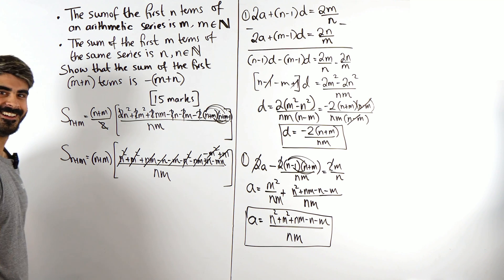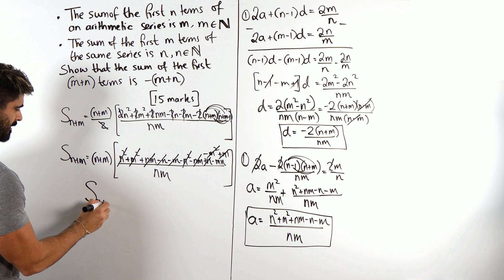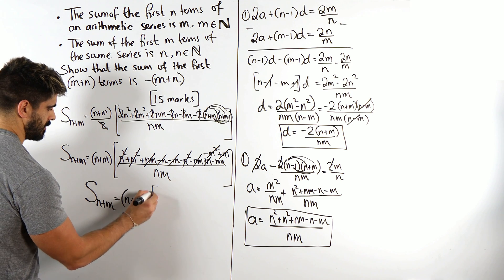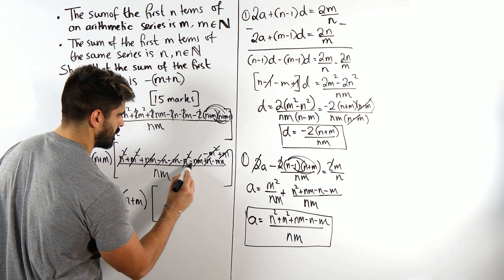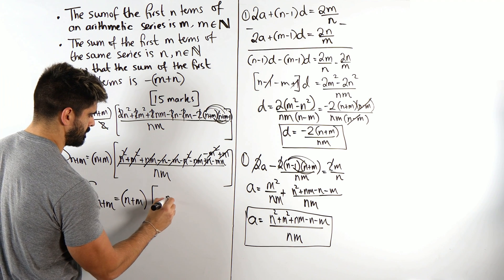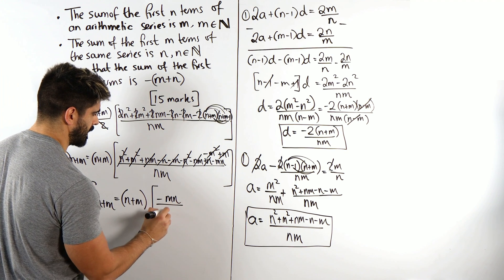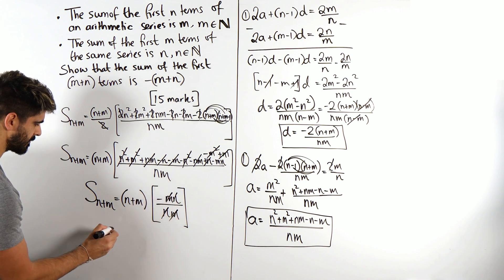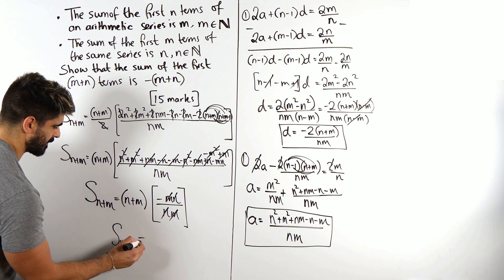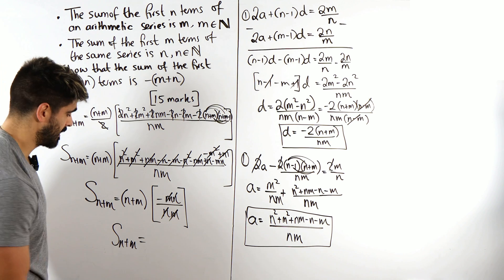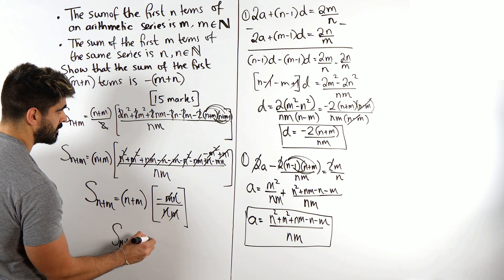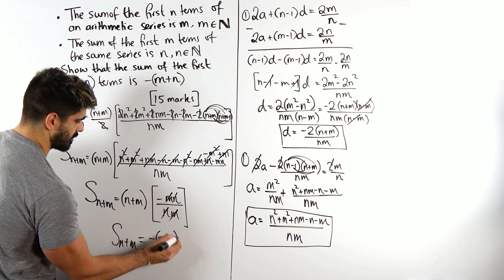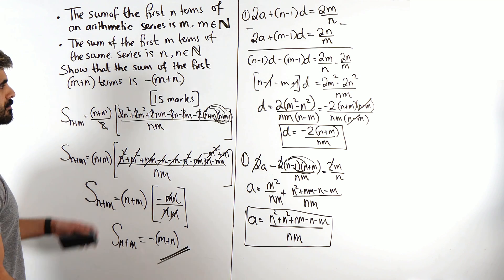Minus n plus n, minus m plus m. Ayo, what do I even have left? Say no more, ignore me. The sum of m plus n is n plus m lots of minus mn over nm. Cancel cancel, negative. Oh, this is one of the most satisfying questions I've ever done mate. Say no more, it's the negative of m plus n. I'm going to swap these around just to get exactly how the question wanted it, and that has been proved. That's all of our working.